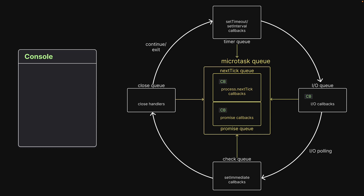First, the callback from the nextTick queue is dequeued and executed, which logs a message to the console. Now that the nextTick queue is empty, the event loop proceeds to the promise queue. The callback is dequeued and executed on the call stack, logging a message to the console. At this point, the promise queue is empty and the event loop proceeds to the timer queue. Since there are no callbacks in the timer queue, the event loop proceeds to the IO queue. We have one callback which is dequeued and executed, resulting in the final log message in the console.